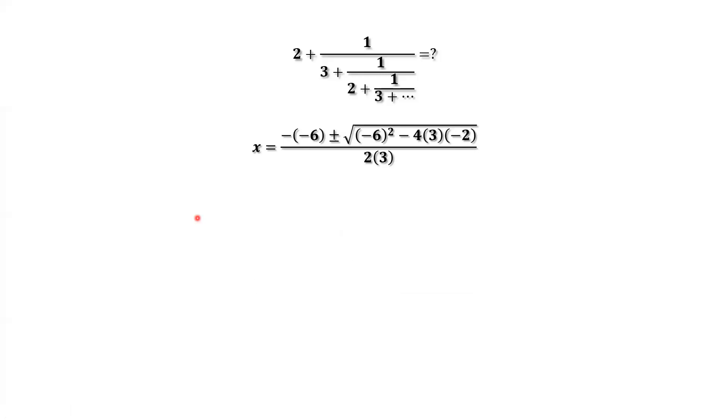We continue to simplify the right-hand side. The right-hand side equals 6 plus minus square root of 60 divided by 6. The final answer is 1 plus or minus square root of 15 divided by 3.